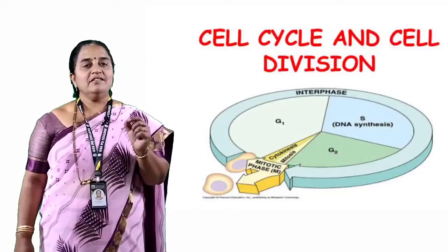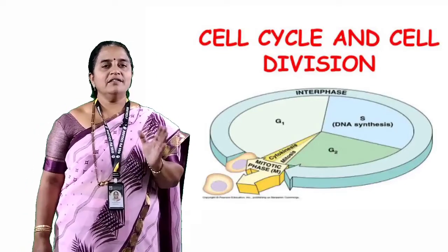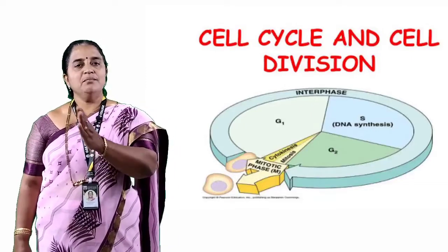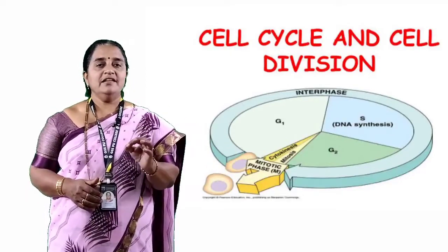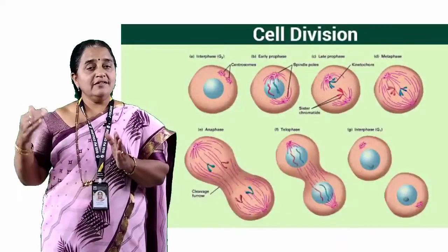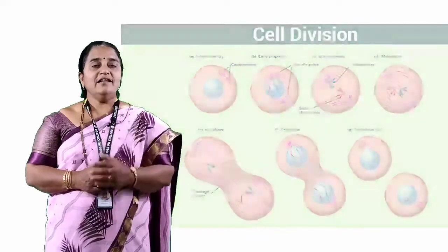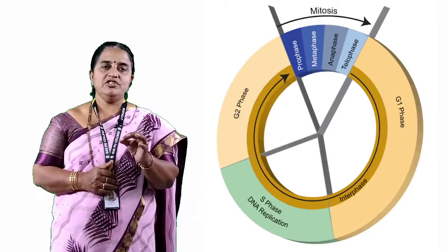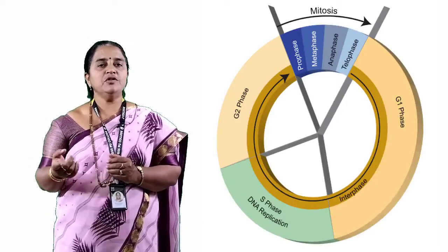Hello students, today let us begin with the next topic from Unit 3. The name of the topic is cell cycle and cell division. Cell cycle is a complete lifespan of a cell. As every organism takes birth, grows, matures, and reproduces to give new offspring, every cell arises from a pre-existing cell by the process of cell division. It grows, attains maturity, and then divides into two daughter cells. Cell cycle is defined as the sequential events in which the cell duplicates its genome along with other constituents of the cell and eventually divides into two daughter cells.